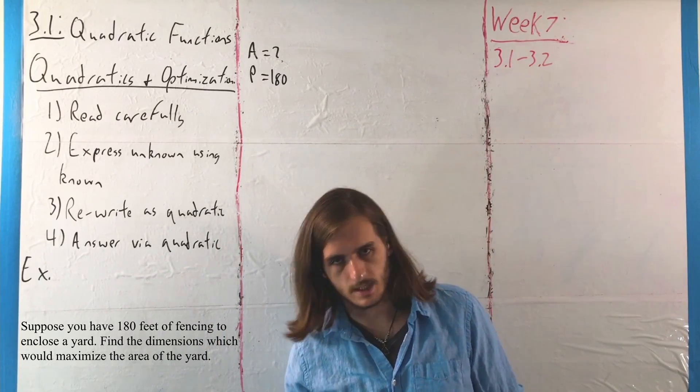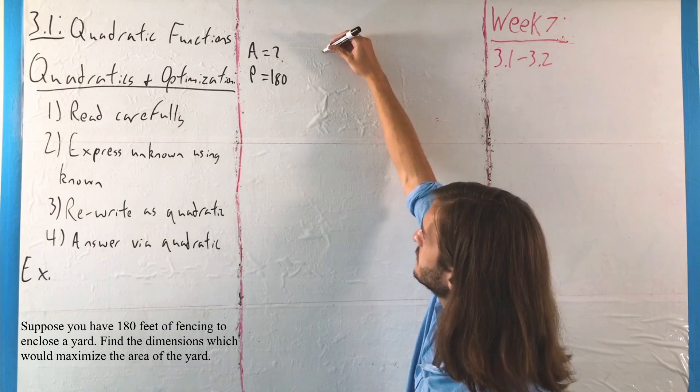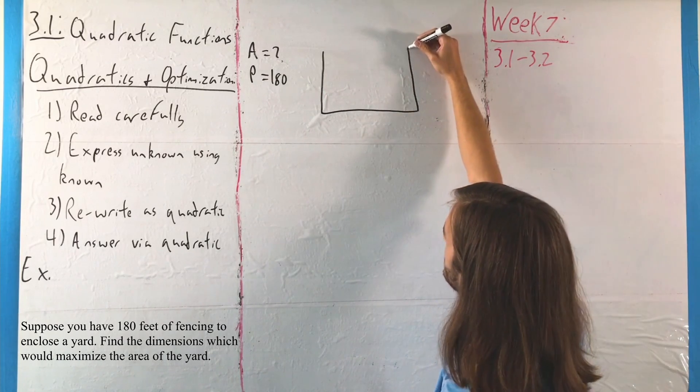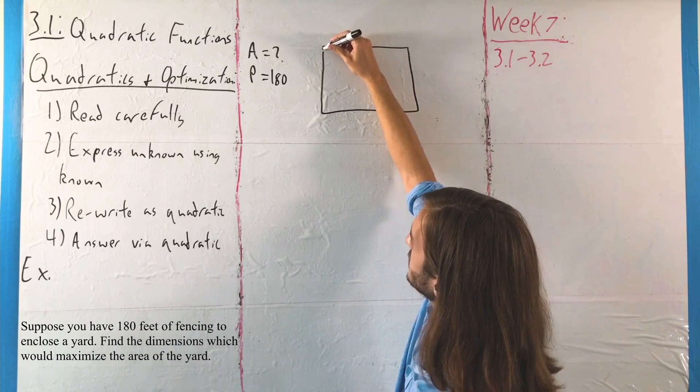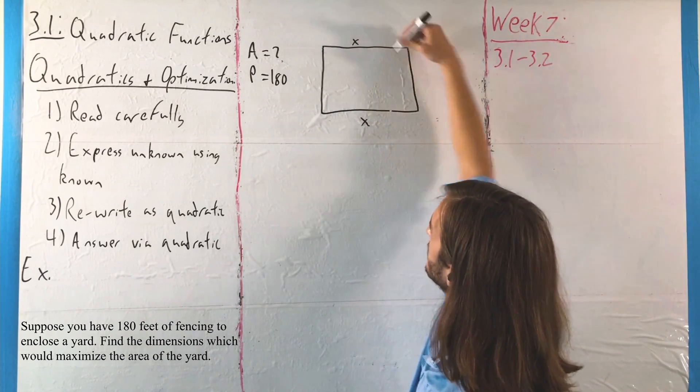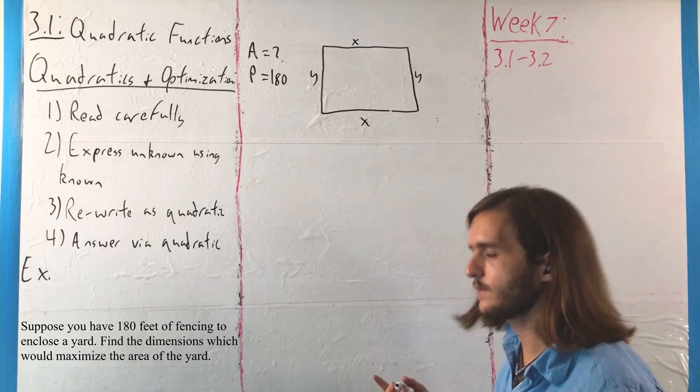And often in that first step, a nice way to visualize what's going to happen, a nice way to understand where this is going, is when you can draw a nice little picture for yourself. Obviously this isn't quite to scale, but you get the idea. And for the sake of consistency, I'll call the horizontal sides x and the vertical sides y.